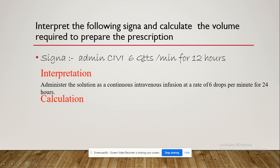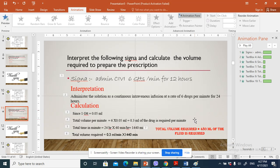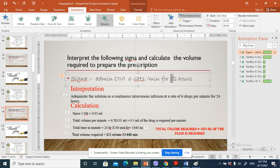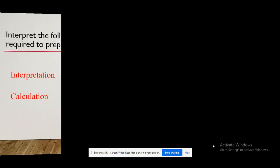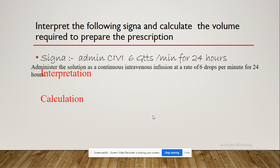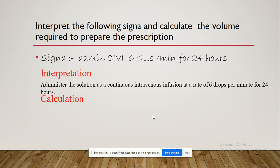At a rate of 6 drops per minute for 24 hours. To do the calculation and the interpretation: administer CIVI 6 drops per minute for 24 hours. The answer will be: administer the solution as a continuous intravenous infusion at a rate of 6 drops per minute for 24 hours.